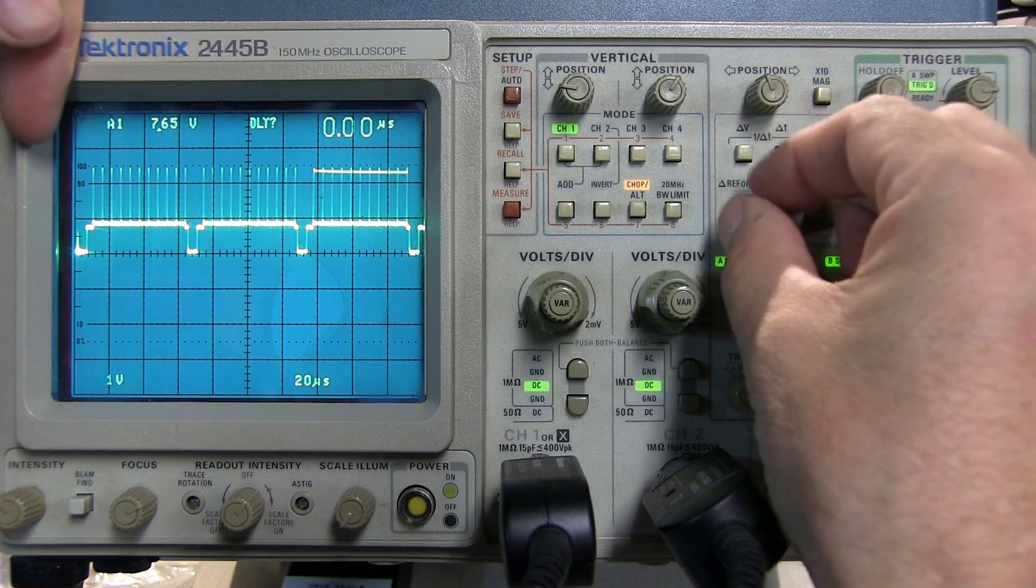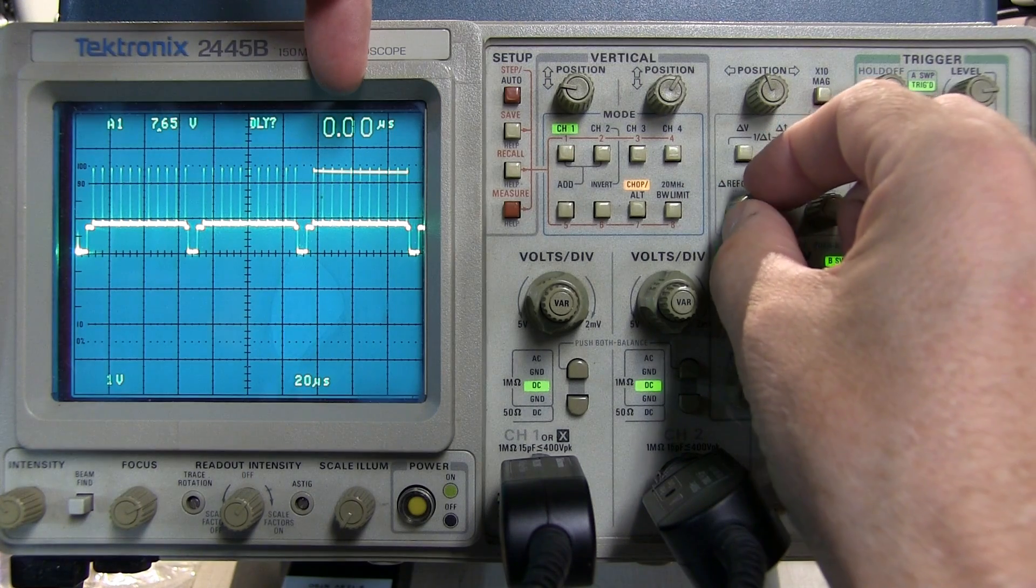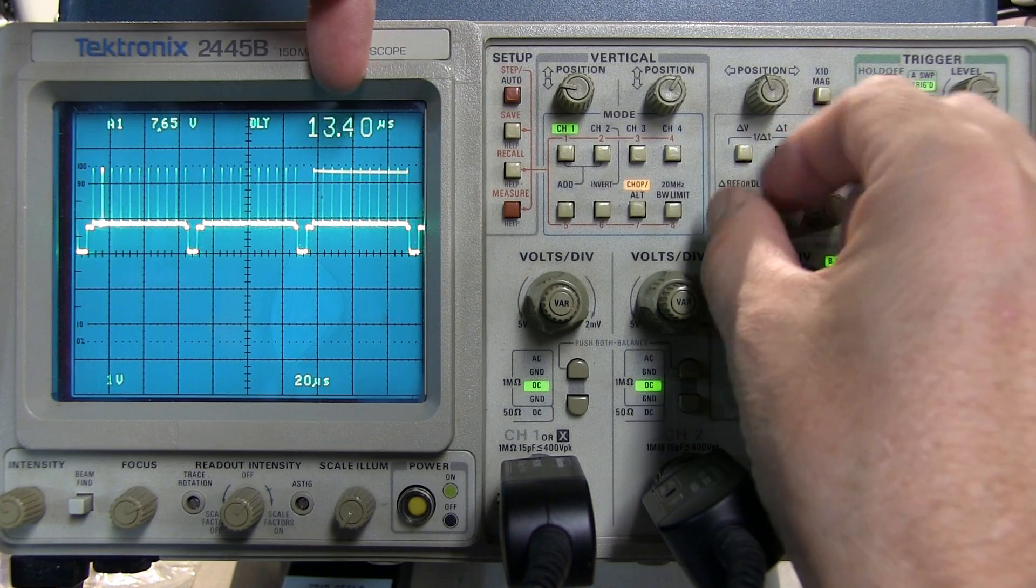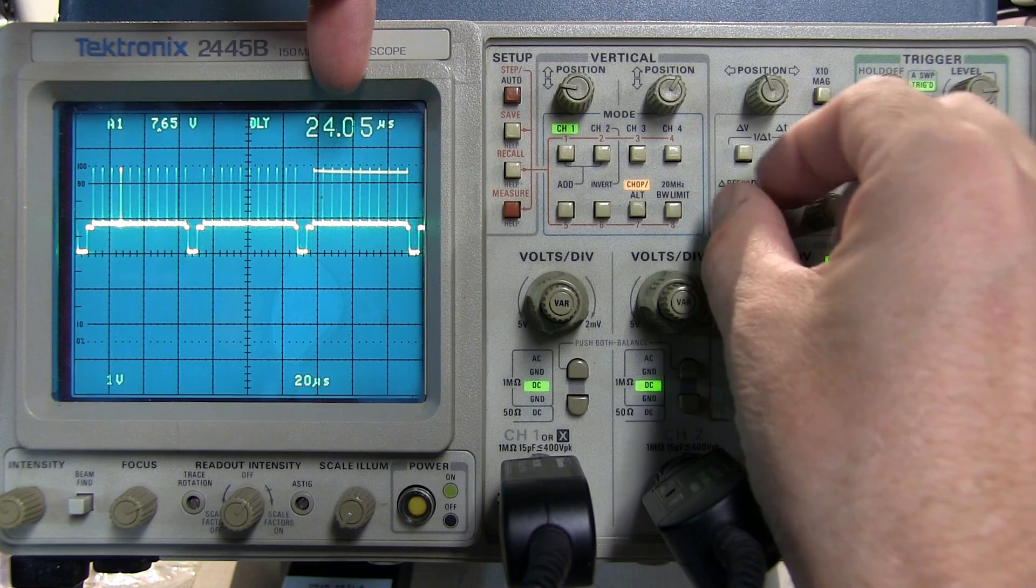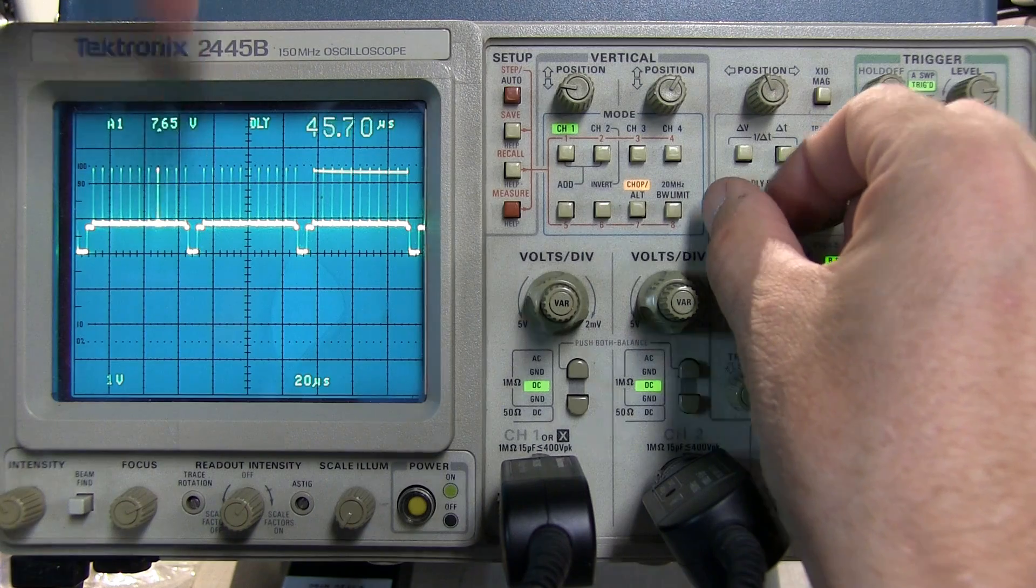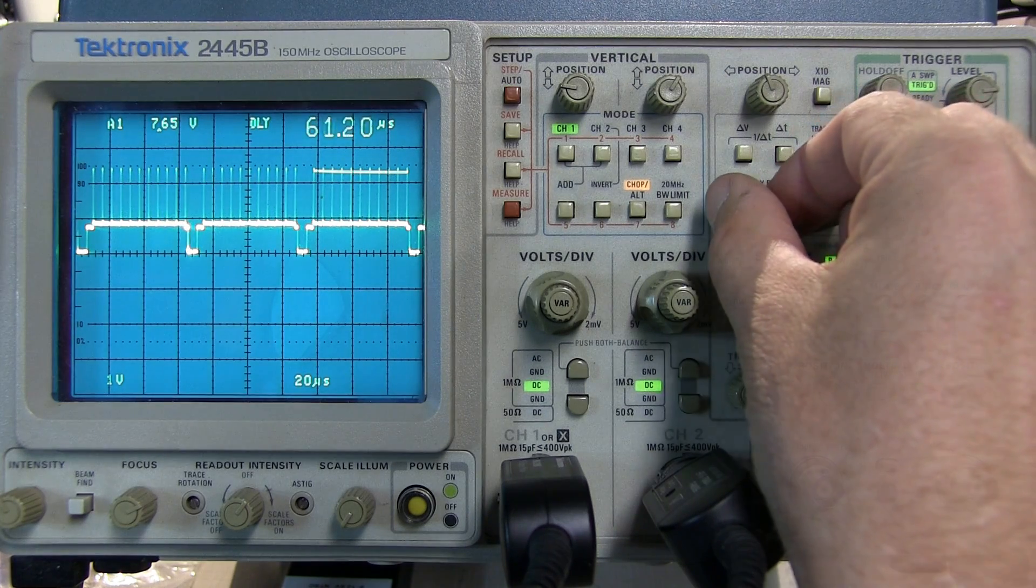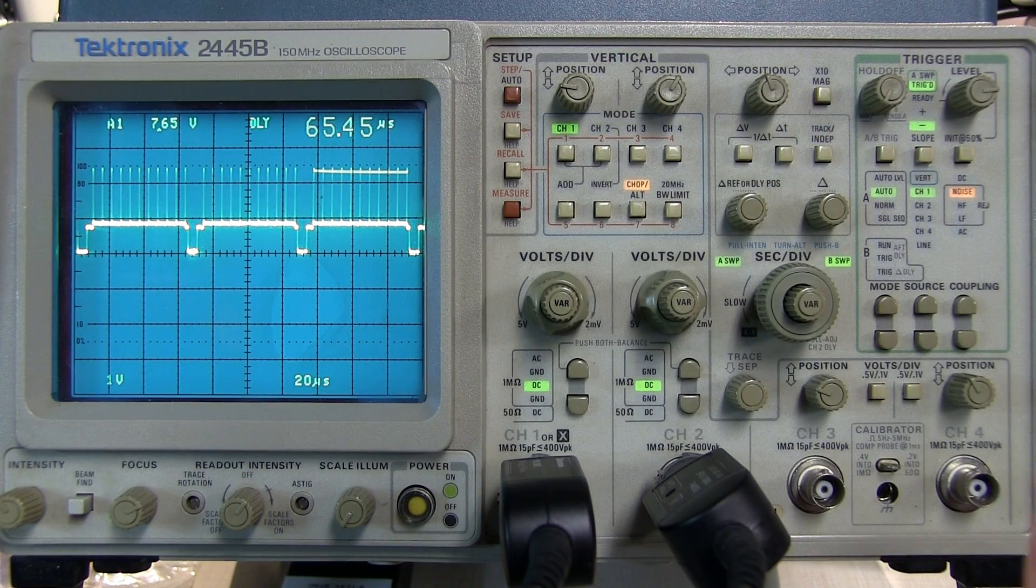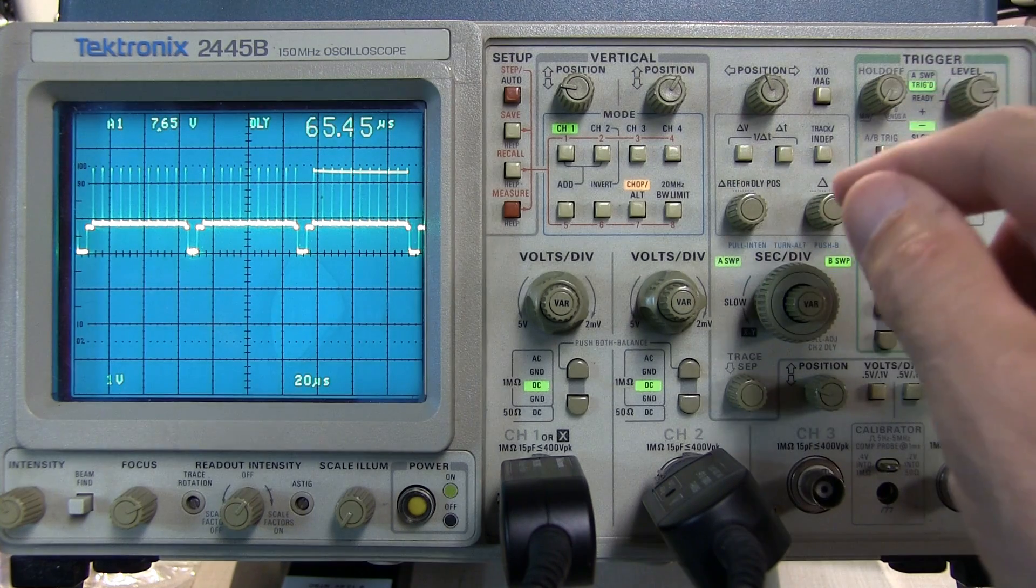So if I adjust the delay all the way over we see we're at zero microseconds and as I walk my way down I can actually just use this to get an idea of the delay time from the trigger event to other events in the waveform. Of course that might not be all that interesting because we've got cursors that we can use for that.